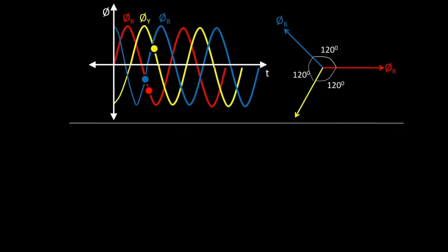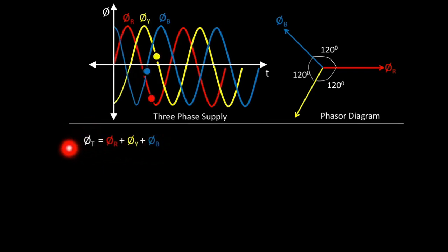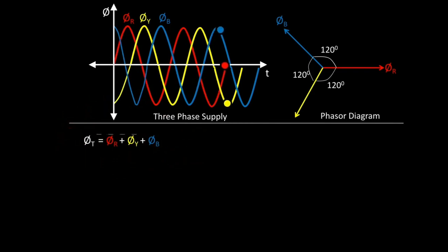But what is the total flux? The total flux at any instant will be the summation of all three fluxes. To calculate the total flux at any instant, we have to add these three fluxes φR, φY, and φB. But as this is an AC system, this addition will not be arithmetic — this addition will be phasor addition.